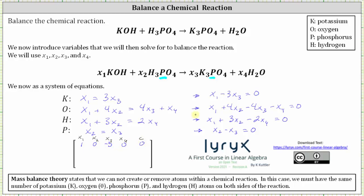The second equation gives us the row: one, four, negative four, negative one, zero. The third equation gives us the row: one, three, zero, negative two, zero. The fourth equation gives us the row: zero, one, negative one, zero, zero.